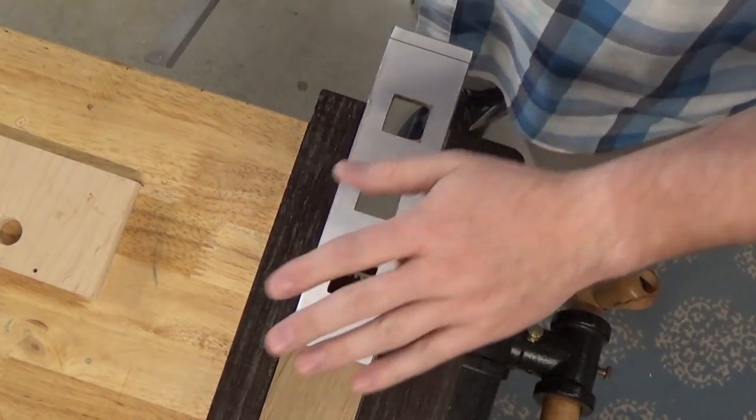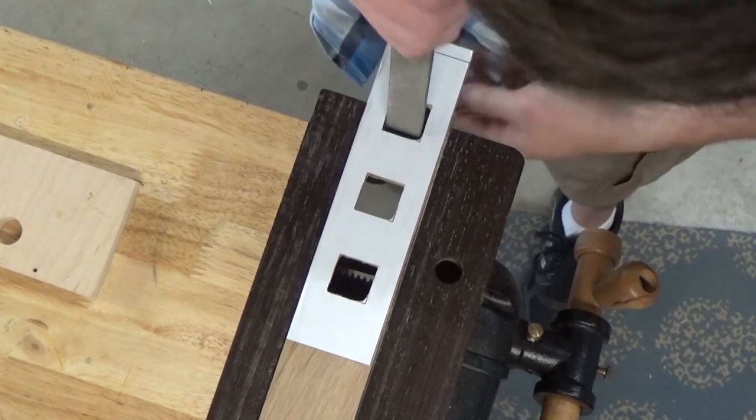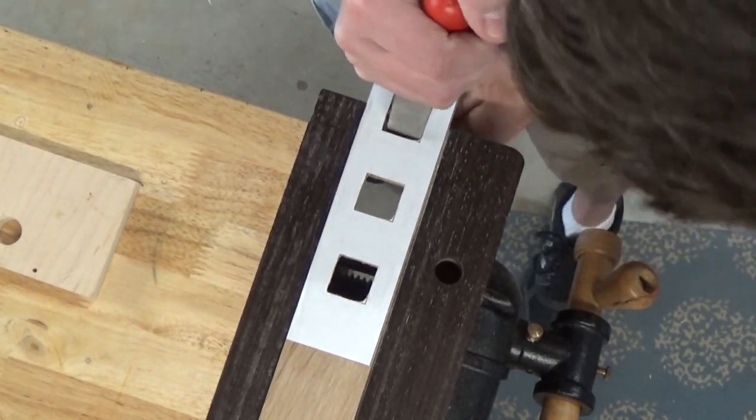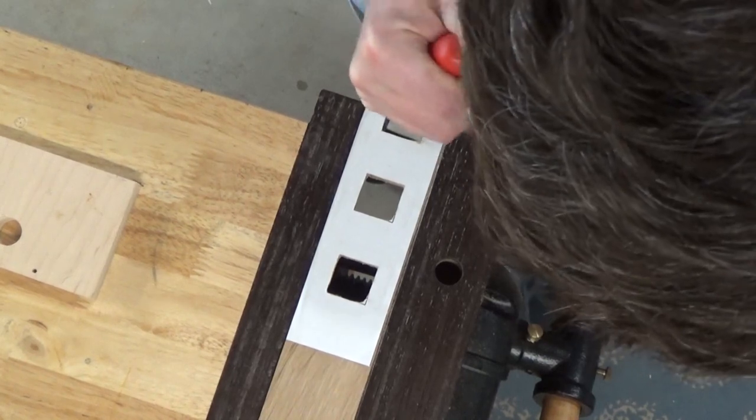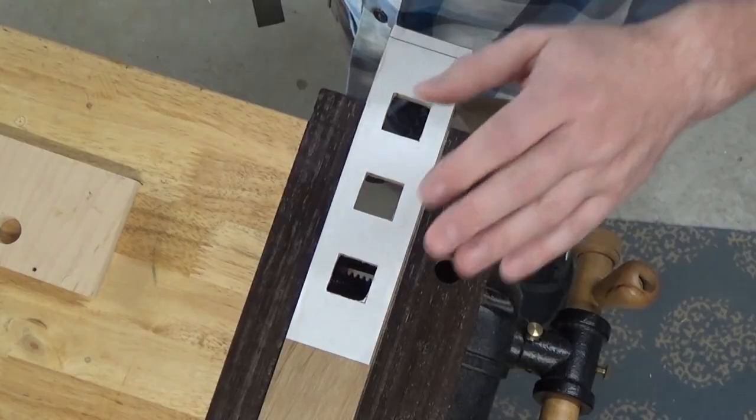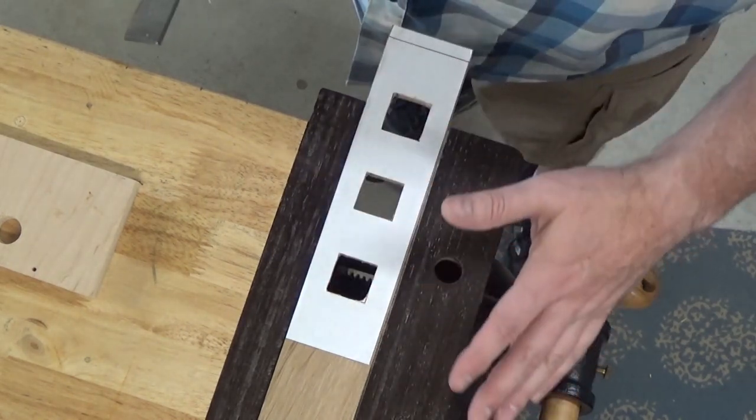I found clamping the workpiece flat in the vise like this is much better. I have much better visibility into the cut. And I also have much better visibility if I need to fine tune the alignment and squareness of the holes.